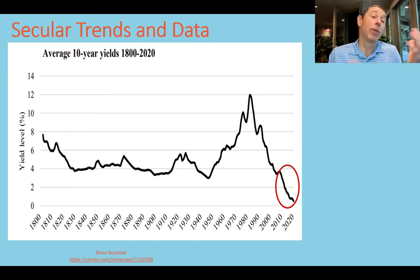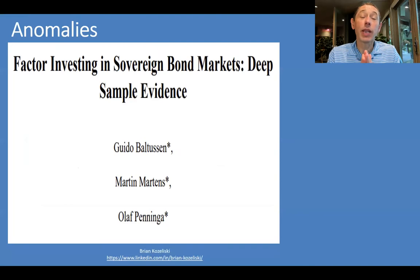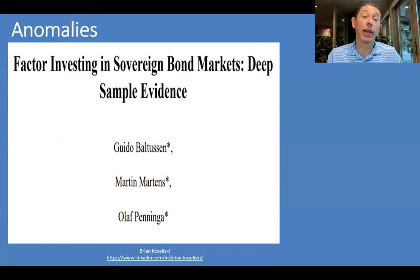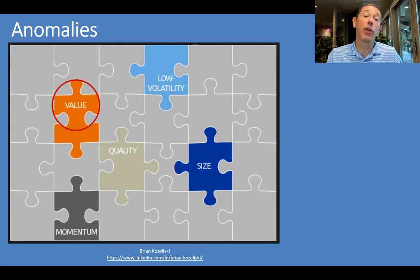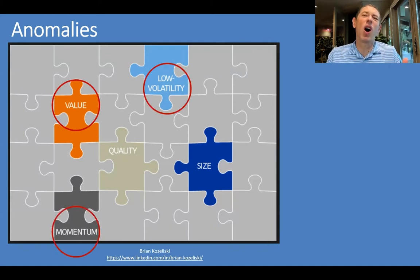These authors managed to get all this data and went ahead and tried to see if they could find any market anomaly. So what did they look at? The usual suspects: they looked at a value measure, a momentum measure, and a low-vol or low-risk measure. Let's go ahead and define those as they did in their paper.